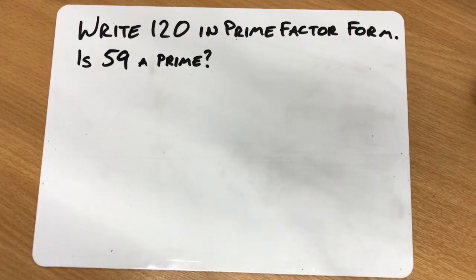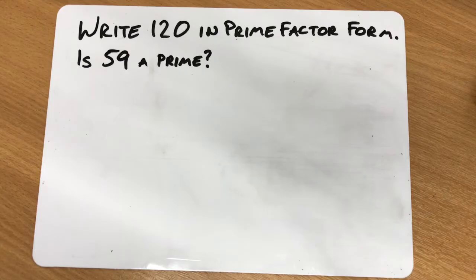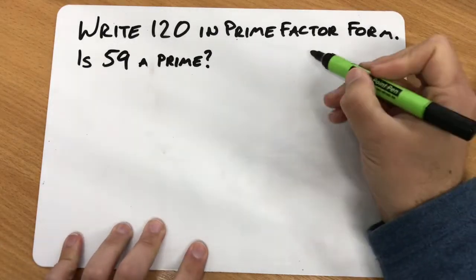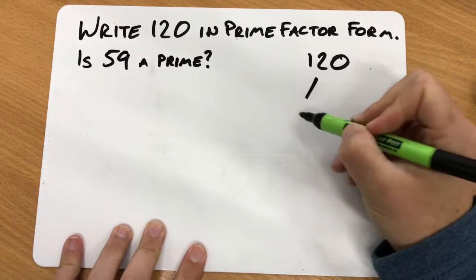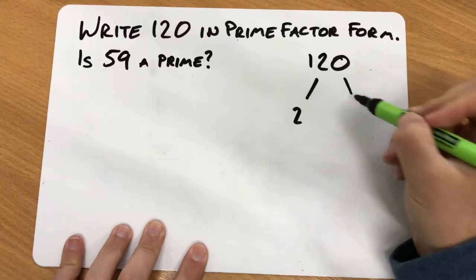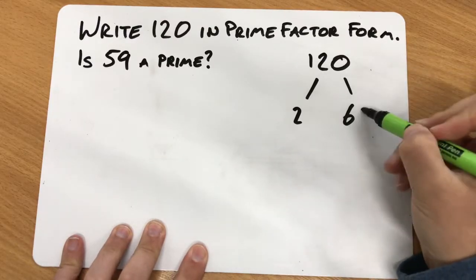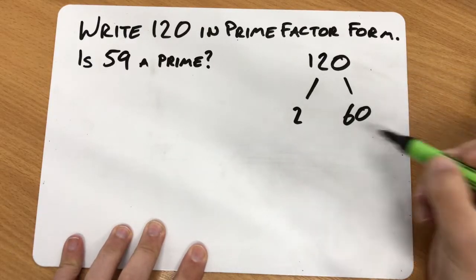These two questions represent things that we're fairly commonly asked to do. To write 120 in prime factor form, the usual way of doing it is to take your target number and split it into its prime factors. So splitting that into 2 and 60, then splitting the 60 further into 3 and 20.